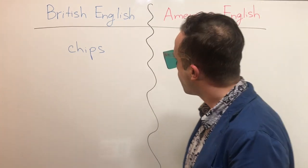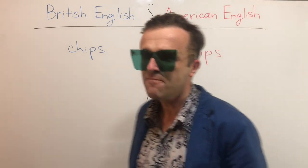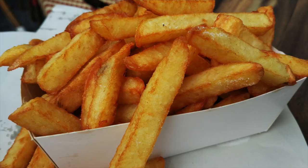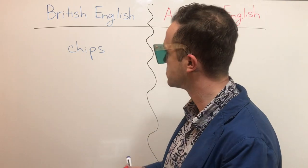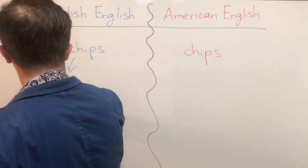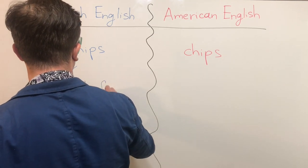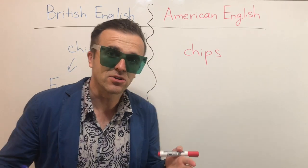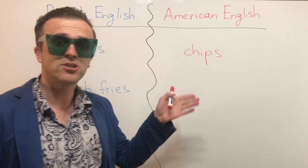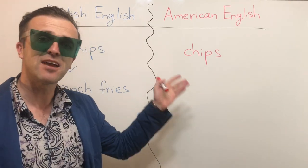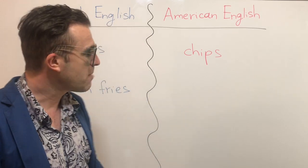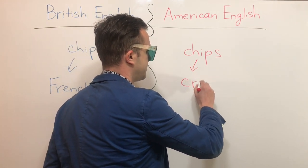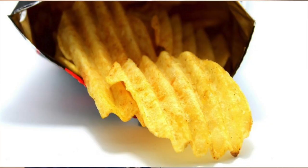Look at the board — here we have the same word: chips. In British English, chips are something like French fries — some fried potatoes. And in American English, chips mean something that is crunchy, mainly crisps. So chips mean crisps, something that is crunchy.